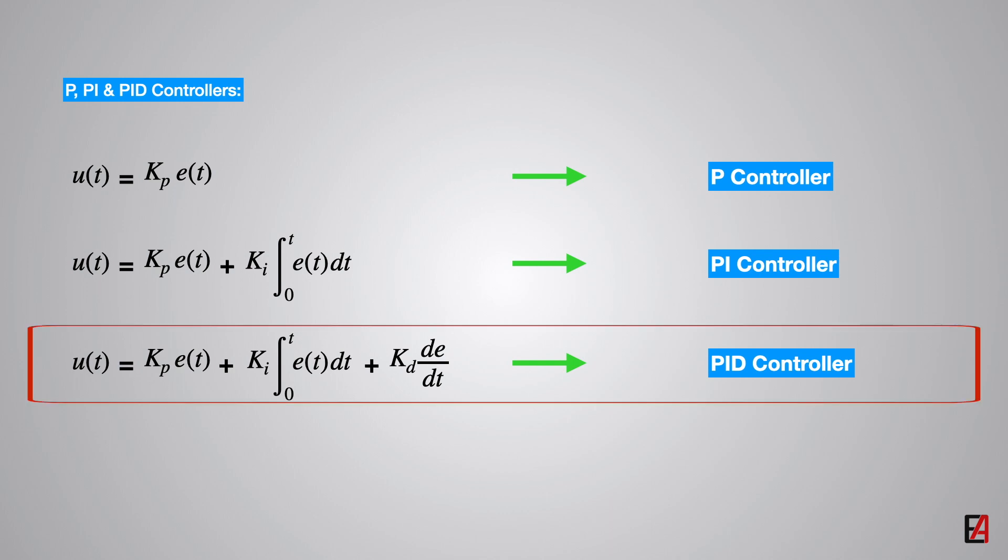Final combination is the PID controller. In this, proportional, integral, and derivative gains are used. Now we will go through each of these combinations in detail and understand why PID combination is widely used.